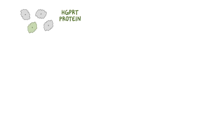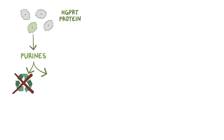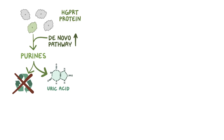A mutation in the HGPRT gene means that there's less of the functional enzyme, and as a result, purine bases can't get recycled, and instead they get degraded into uric acid. At the same time, to make up for the lack of recycling, the de novo purine synthesis pathway ramps up, which results in even more purines getting broken down to uric acid. All that uric acid builds up in the blood, causing hyperuricemia.